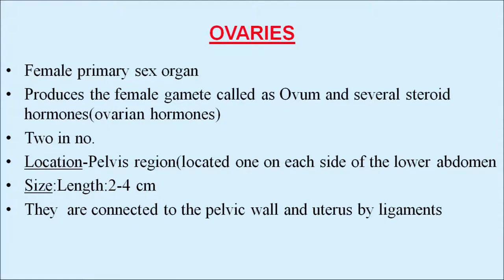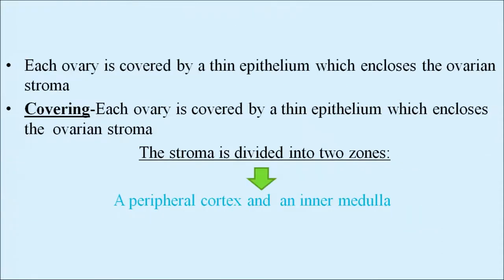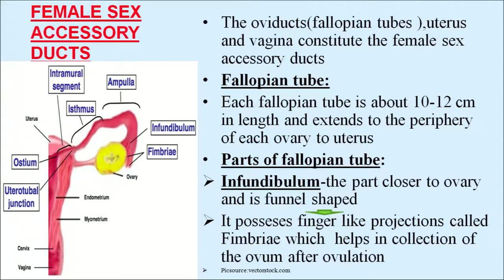Ovaries are connected to the pelvic wall and uterus by special ligaments. Each ovary is covered by a thin epithelium which encloses the ovarian stroma. The stroma is divided into two zones: a peripheral cortex and an inner medulla. The female sex accessory ducts — the oviduct, uterus, and vagina — constitute the female sex accessory duct system.